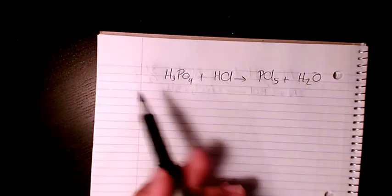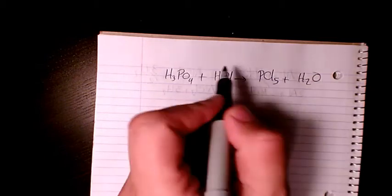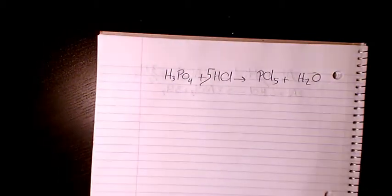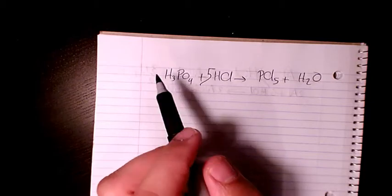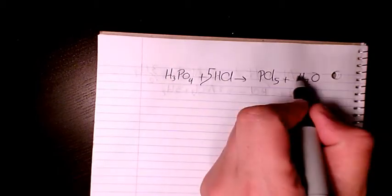We have one and one, that's balanced. Chlorine, we have five in here and we have one here, so I make it five. And then oxygen, we have one here and we have four here, so I need to put four on this side.